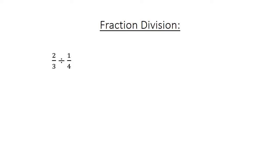Fraction division. 2 over 3 divided by 1 over 4 equals 2 over 3 times 4 over 1 equals 8 over 3.